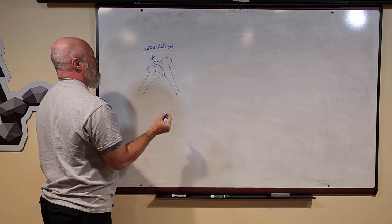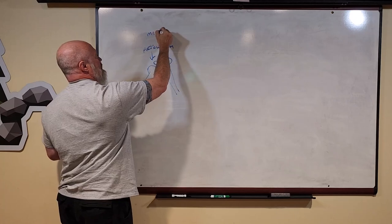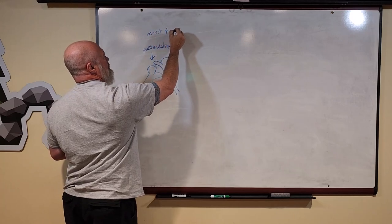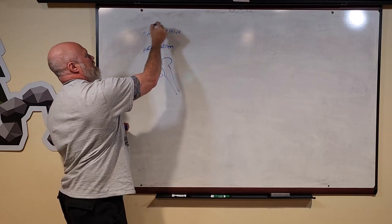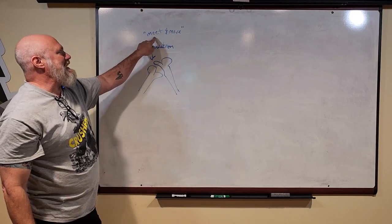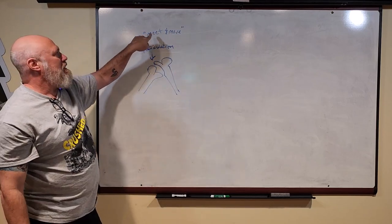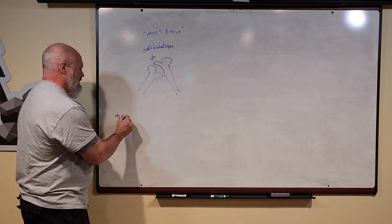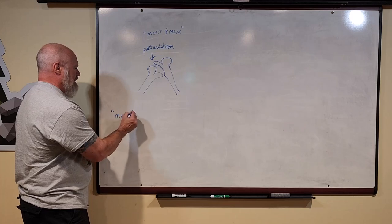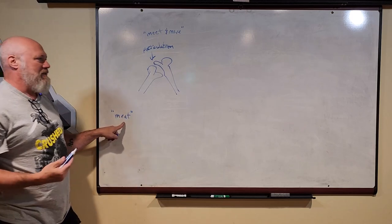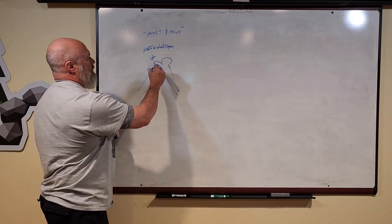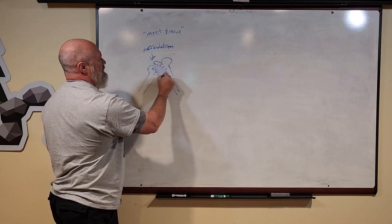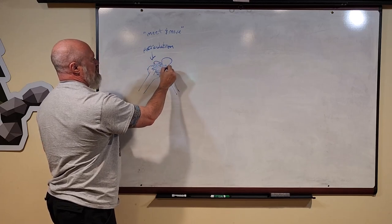That's where the bones meet and move. Meet, M-E-E-T. That's different from meat, M-E-A-T, which means muscle or the meat you eat. This articulation is woven together with some connective tissue.